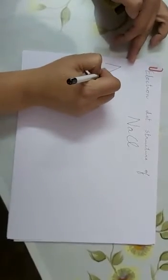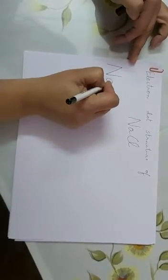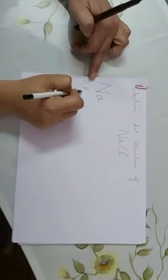First of all, what is the symbol of sodium? Na. Now, what is the electronic configuration of sodium? Atomic number 11, so it is 2,8,1.